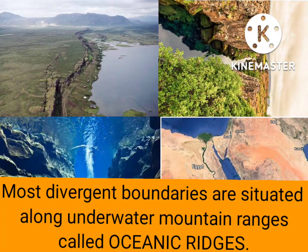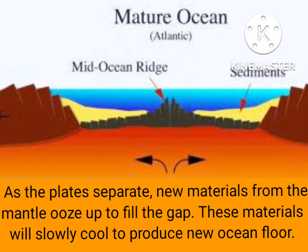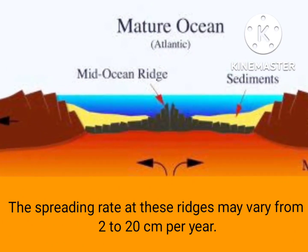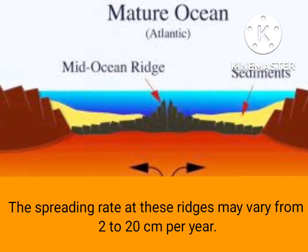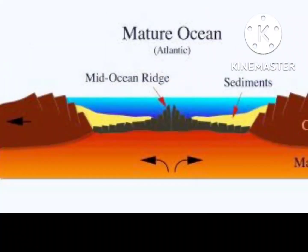Most divergent boundaries are situated along underwater mountain ranges called oceanic ridges. As the plates separate, new materials from the mantle rise up to fill the gap. These materials will slowly cool to produce new ocean floor. The spreading rate at these ridges may vary from 2 to 20 centimeters per year. Although a very slow process, divergence of plates ensures a continuous supply of new materials from the mantle.